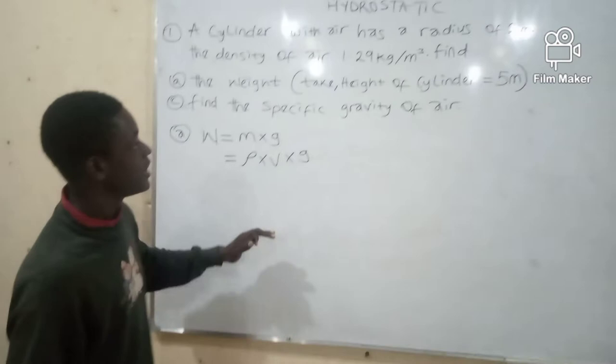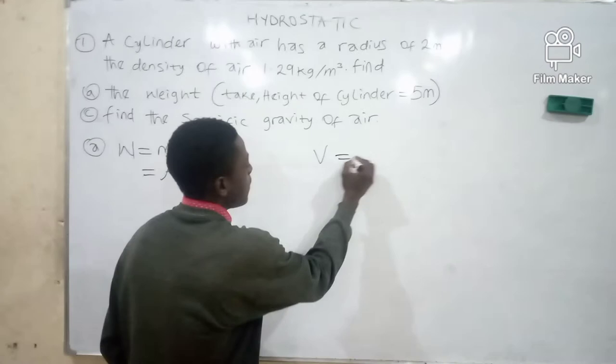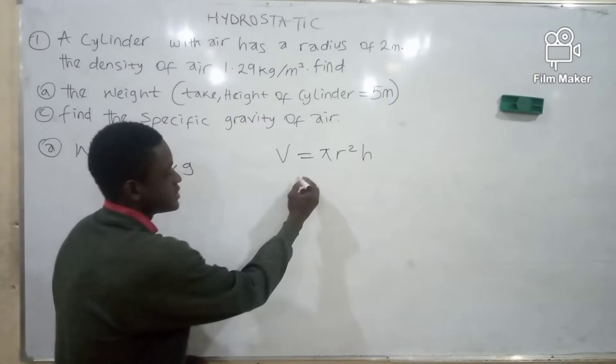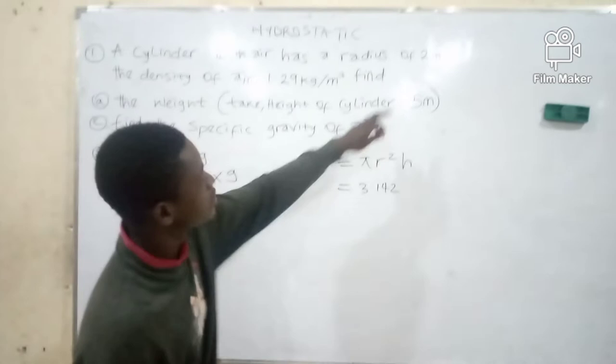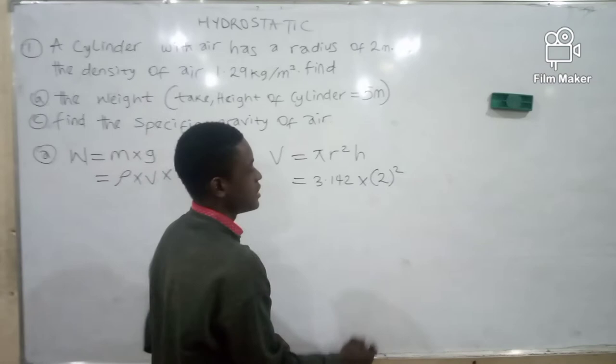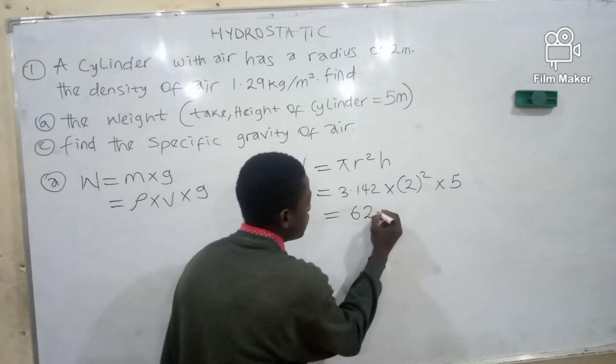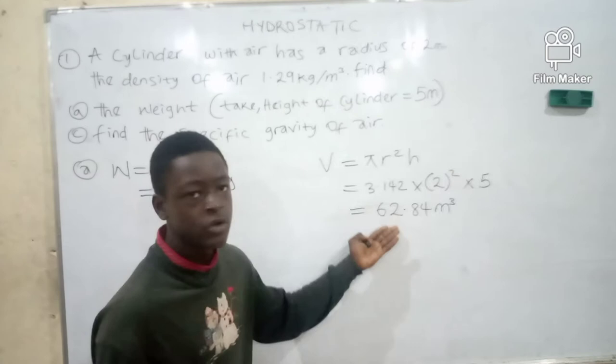Now we are given the density of air, and we have to find the volume of air in the cylinder. We all know that the volume of a cylinder is equal to π r² h. Now π is 3.142, and our radius from the question is 2 meters. So we have 3.142 times 2 squared times 5 meters. The final answer for our volume here is 62.84 meter cubed. Now we have our answer for volume.